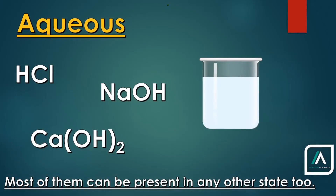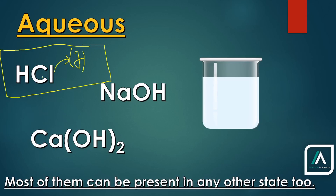Moving on to aqueous solutions — we already discussed that when we add a chemical into water it becomes aqueous. For example, HCl is generally a gas — hydrogen chloride. In its gaseous state it is not hydrochloric acid yet; it doesn't dissociate to give H+ ions until we add it to water. When we add it to water, that's when it dissociates and gives us H+ ions, and we get the aqueous solution of HCl.